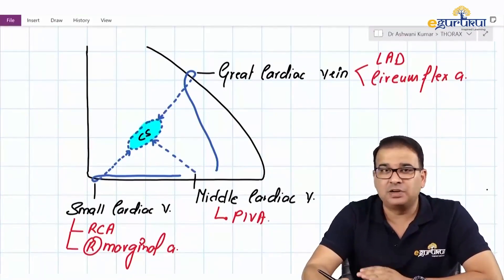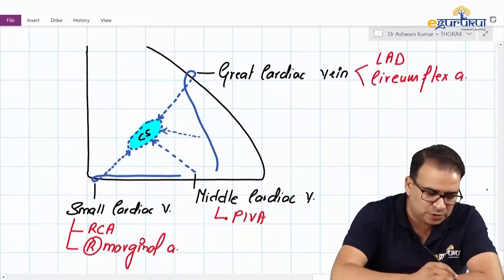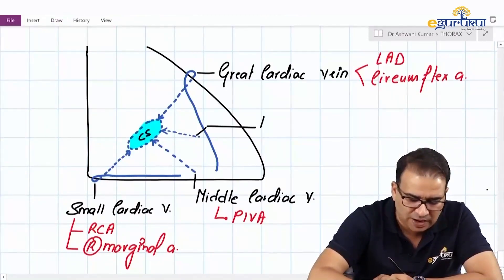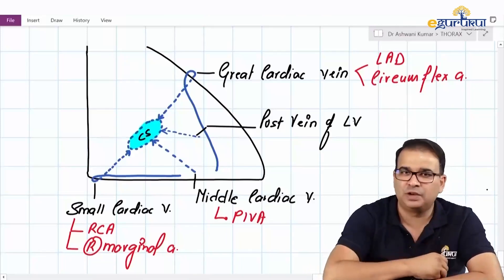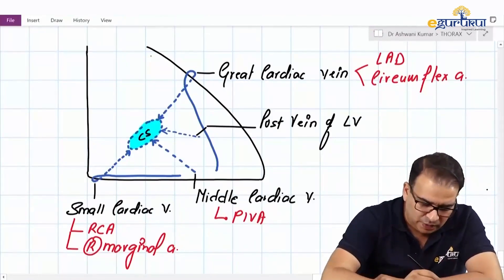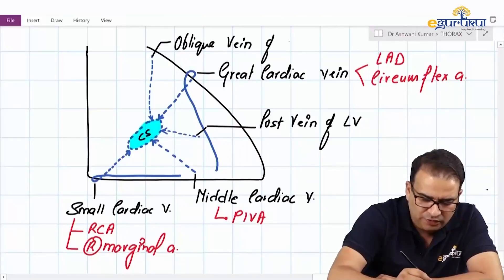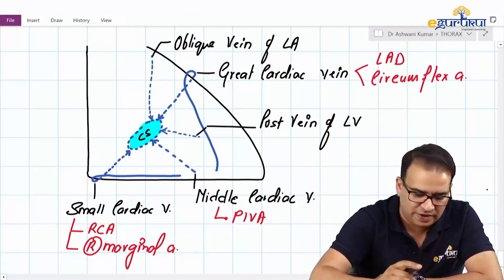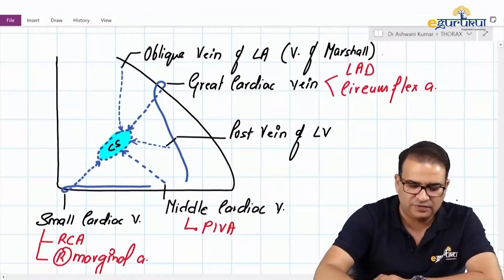Apart from the three major tributaries of the coronary sinus, there are some minor ones. There is the posterior vein of the left ventricle, which drains blood from the posterior wall of the left ventricle. There is also the oblique vein of the left atrium, which drains from above into the coronary sinus on the posterior side. This vein is also known as the vein of Marshall.